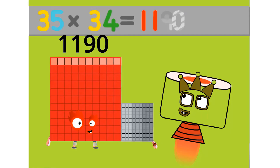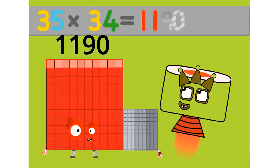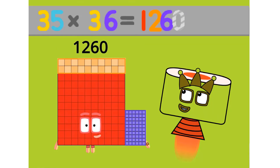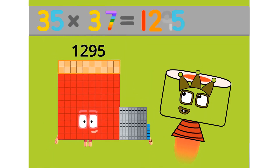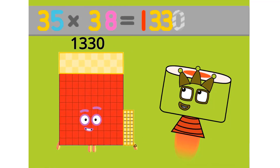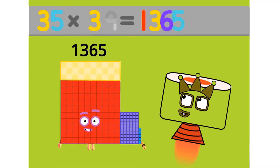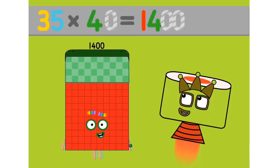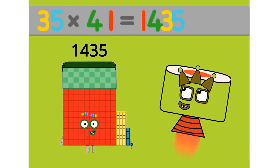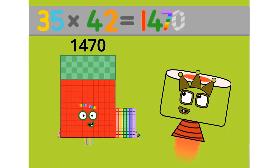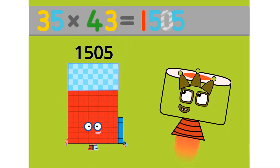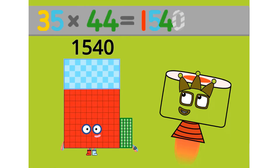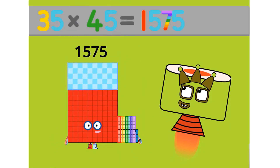35 times 34 equals 1190. 35 times 35 equals 1225. 35 times 36 equals 1260. 35 times 37 equals 1295. 35 times 38 equals 1330. 35 times 39 equals 1365. 35 times 40 equals 1400. 35 times 41 equals 1435. 35 times 42 equals 1470. 35 times 43 equals 1505. 35 times 44 equals 1540. 35 times 45 equals 1575.